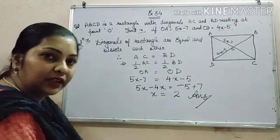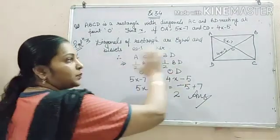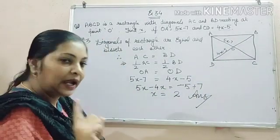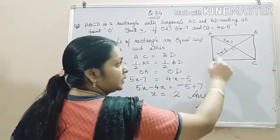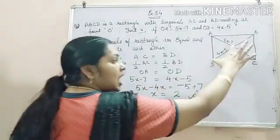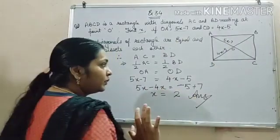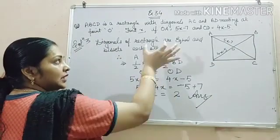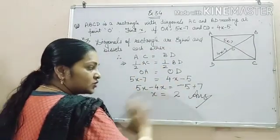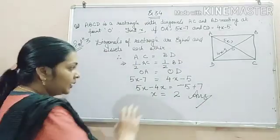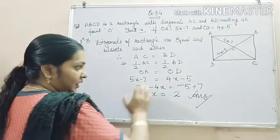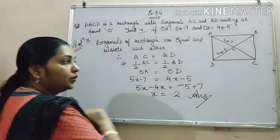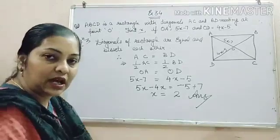So what we have done in this problem? We have just used the property of the diagonals of a rectangle that diagonals of a rectangle are equal and bisect each other. Therefore, AC will be equal to BD, and half part of AC will be equal to half part of BD. That means OA equal to OD. There we substitute the values of OA and OD. After that, we just solve the equation by taking 4x on left hand side and minus 7 on right hand side. We get the value of x is equal to 2. This solves our problem.